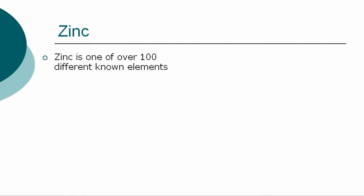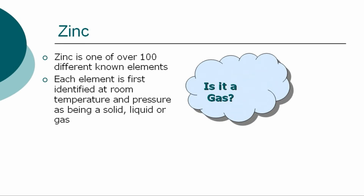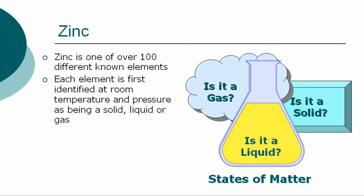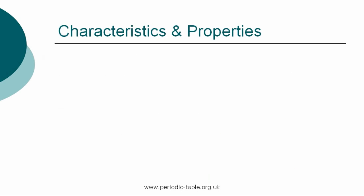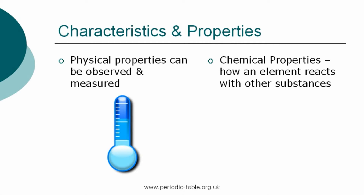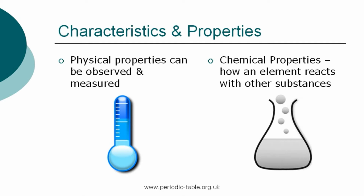The element zinc is one of over 100 different chemical elements known to modern chemistry. Each element is first identified at room temperature and pressure as being a solid, liquid, or gas — referred to as states of matter. Zinc is a solid at normal room temperature and pressure. Each element has physical properties that can be observed and measured, such as color, density, and odor. The chemical properties are the characteristics that determine how a substance will react with other substances, such as water or oxygen.